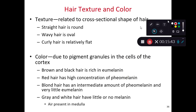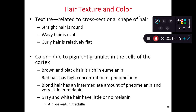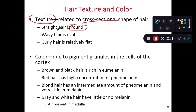As we look at individual hairs, they have texture related to the cross-sectional shape of the hair. Straight hair has a completely round cross-sectional shape. Wavy hair is oval in cross-sectional shape. And curly hair tends to be elongated and flattened in cross-sectional shape. So the cross-sectional shape of the hair determines whether the hair goes straight, wavy, or curly.